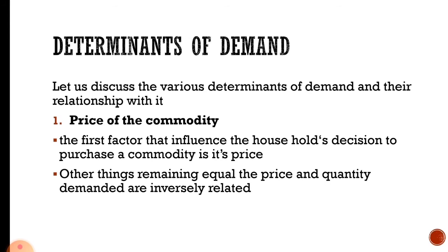The first determinant of demand is the price of the commodity. The first factor that influences the household's decision to purchase a commodity is its price. Other things remaining equal, the price and quantity demanded are inversely related.